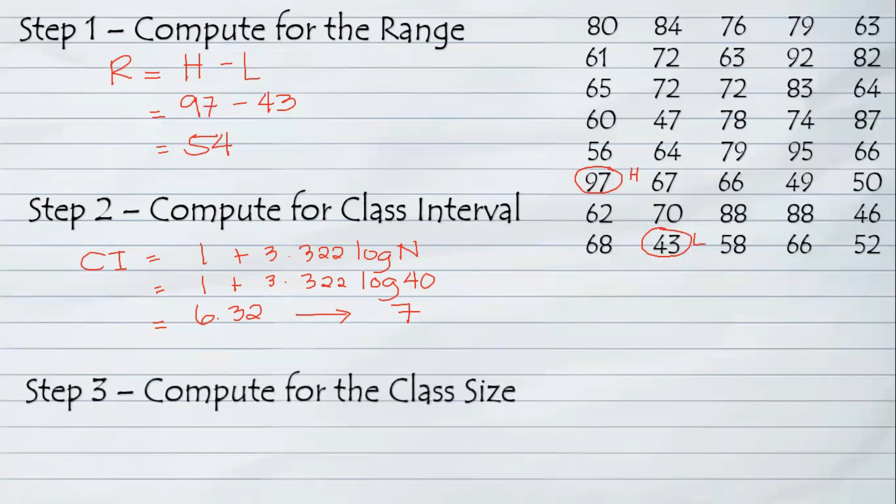Next, we will be computing the class size. How to compute the class size? All you need to do is identify the value of range and divide it by the class interval. So our range based on the computed value we have, 54 all over 7. Divide 54 and 7 results to 7.71. Now, take note we will be rounding up the item. Rounding up the item results to 8.